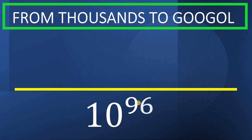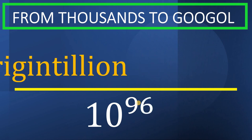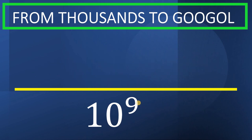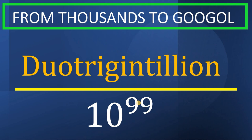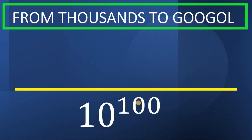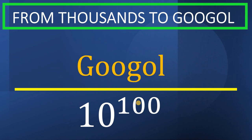10 raised to 96, it is called untrigintillion. 10 raised to 99, this is called duotrigintillion. 10 raised to 100, it is called a googol.